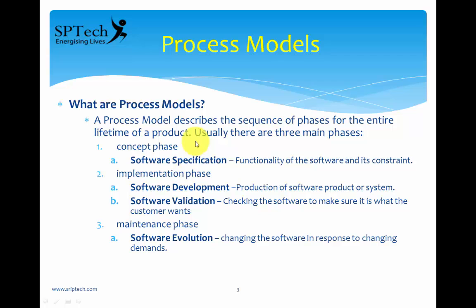What is the concept phase of a process model? It consists of a main process called software specification — that is, the functionality of the software and its constraints. In the concept phase, you are going to specify what software you are going to build. For example, a customer approaches you and says he wants to build an e-commerce portal. You will sit down and write the functionality of that portal, clearly defining the boundary of the entire e-commerce portal. This is called the software specification stage, which comes in the conceptual phase of your process model.